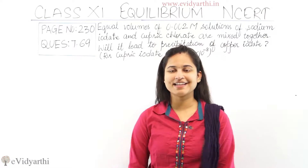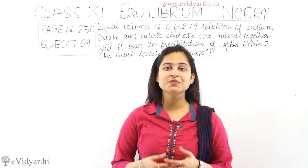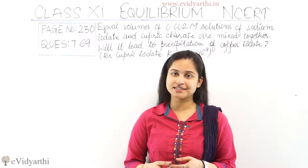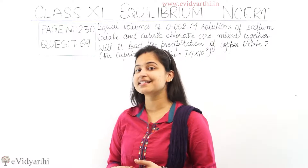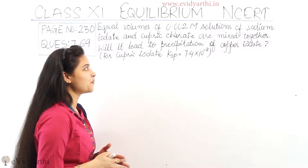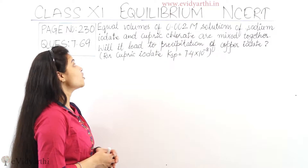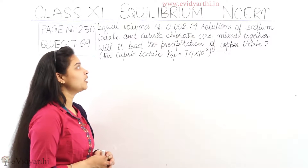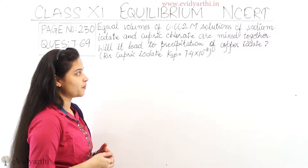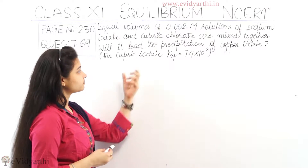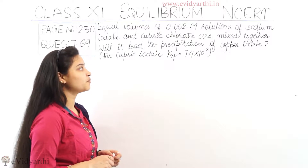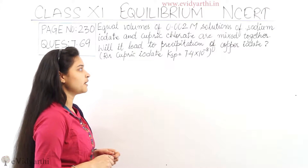Hello everyone, I'm Raki and today in this session I'm going to explain question number 69 which is on page number 230 of NCE Architects chapter number 7, class 11. The question is: equal volumes of 0.002 molar solutions of sodium iodate and cupric chlorate are mixed together. Will it lead to precipitation of copper iodate? For cupric iodate, KSP (solubility product) is given as 7.4 × 10⁻⁸.